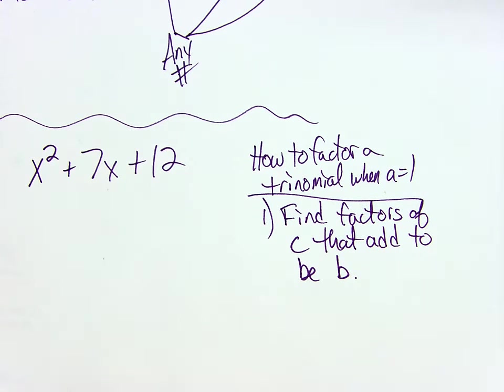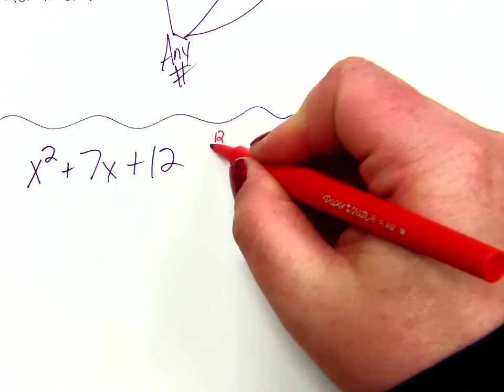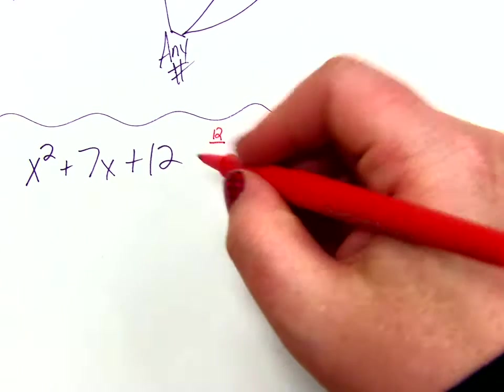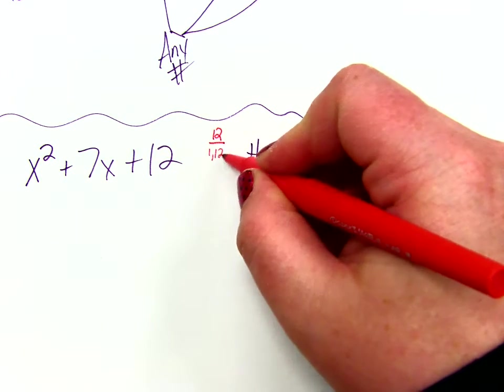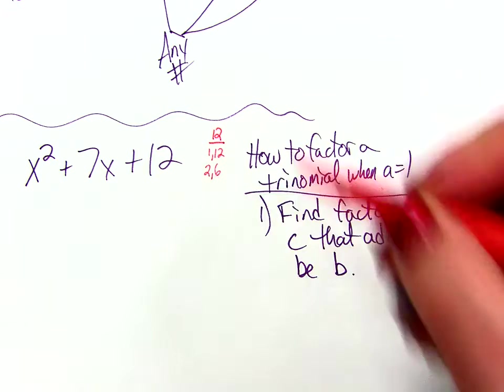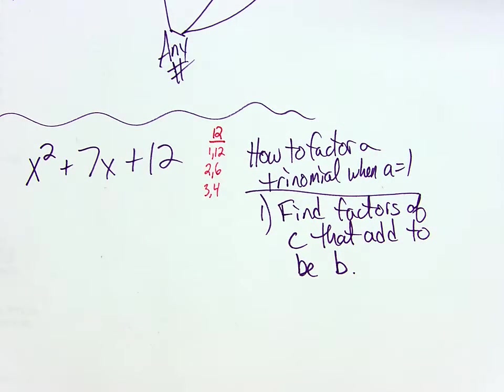12. So I want factors of 12. So sometimes what I like to do is I just like to put a 12 and I just list numbers that multiply together to be 12. So 1 times 12 is 12. What else? 2 and 6. 2 times 6 is 12. 3 and 4. Are there any other combinations of numbers that multiply together to get me 12? That's it.